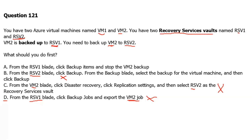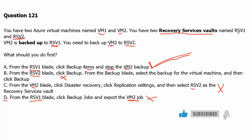Option A: From the RSV1 blade, click backup items and stop the virtual machine backup. From the RSV2 blade, click backup to configure backup. This is the correct answer. Let's move to the next question.